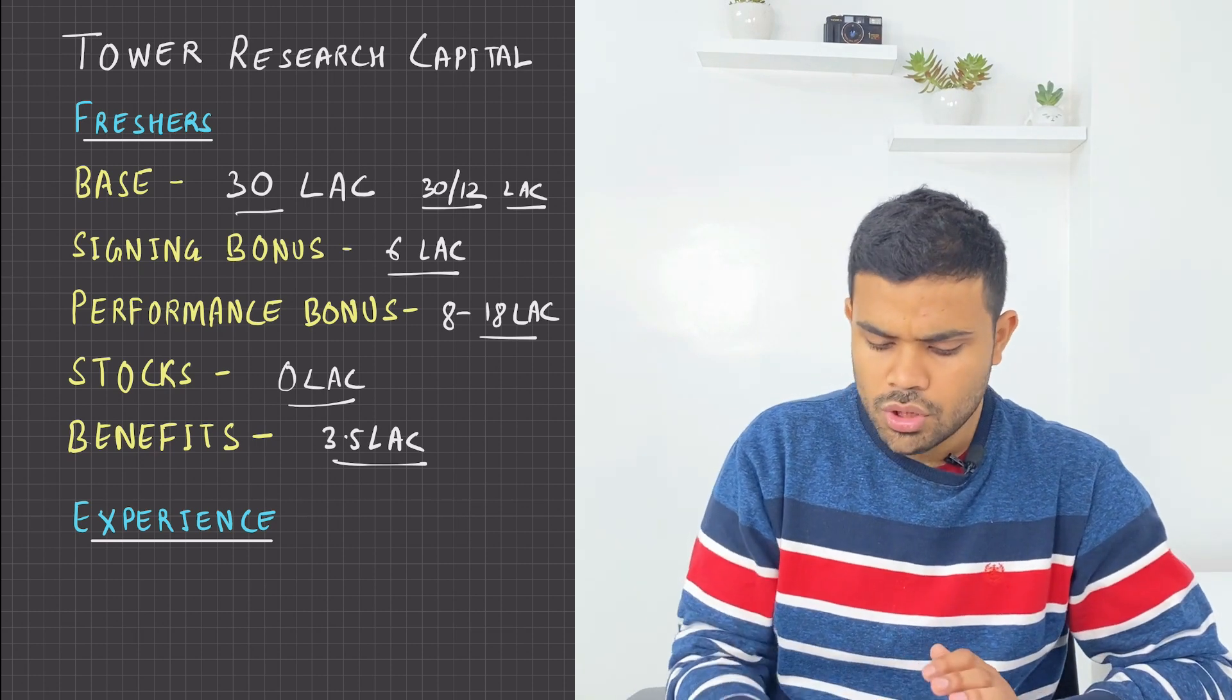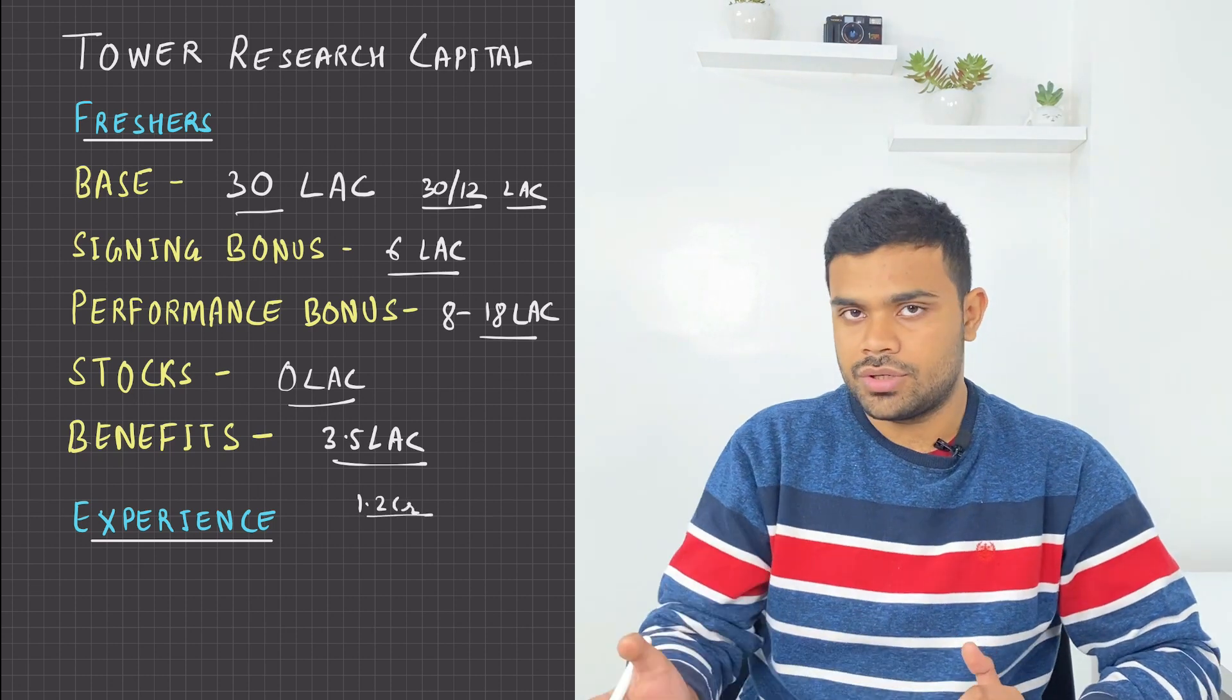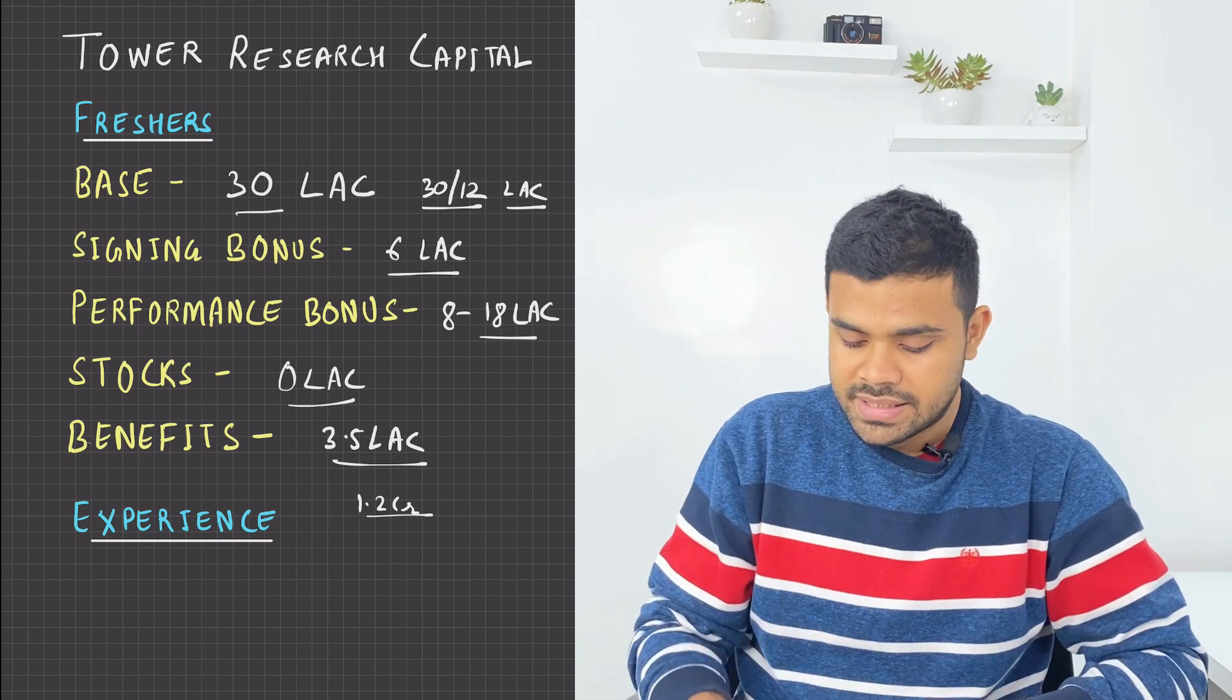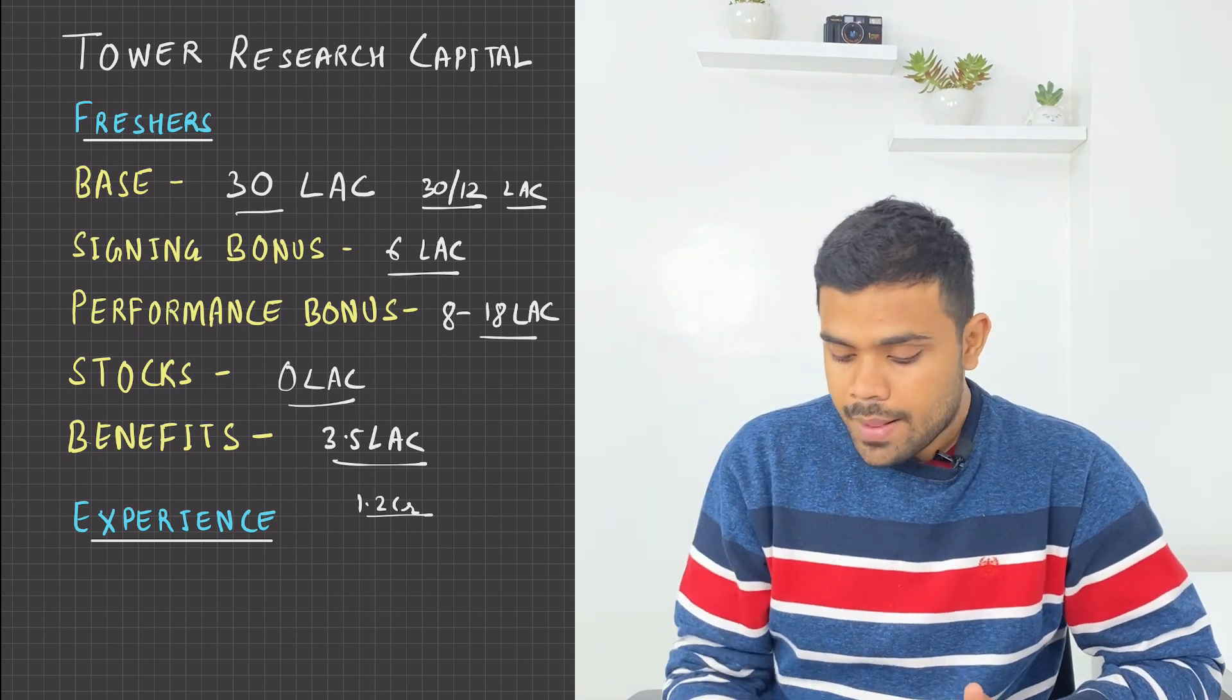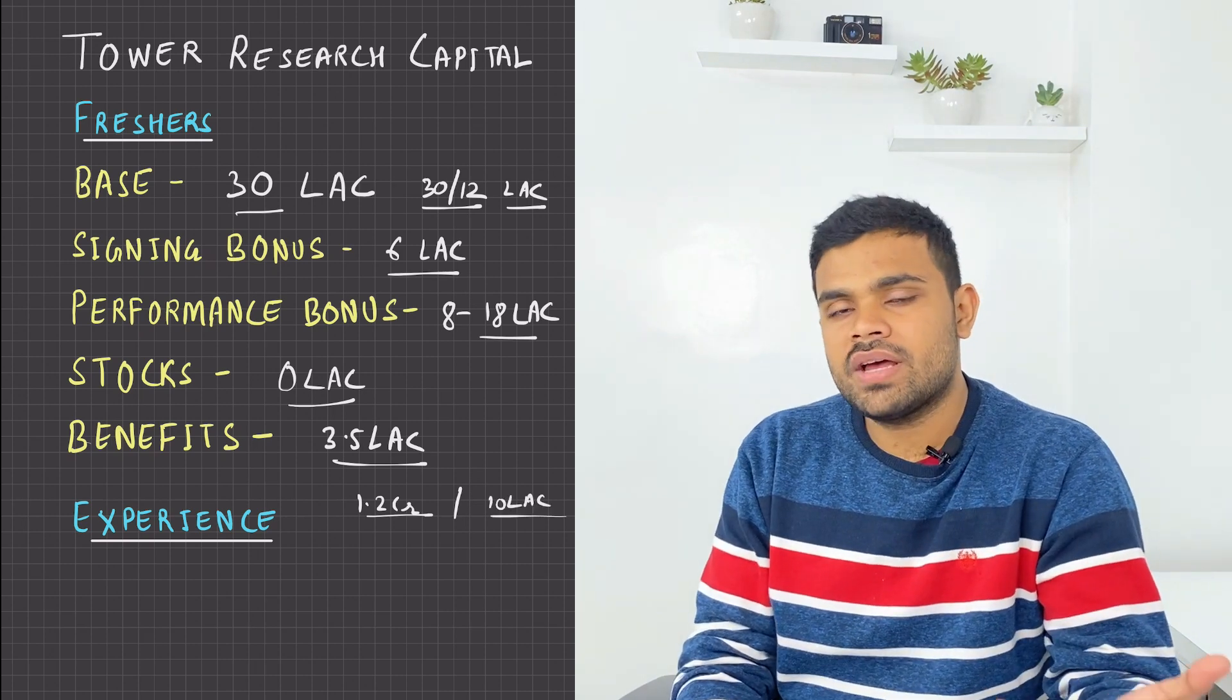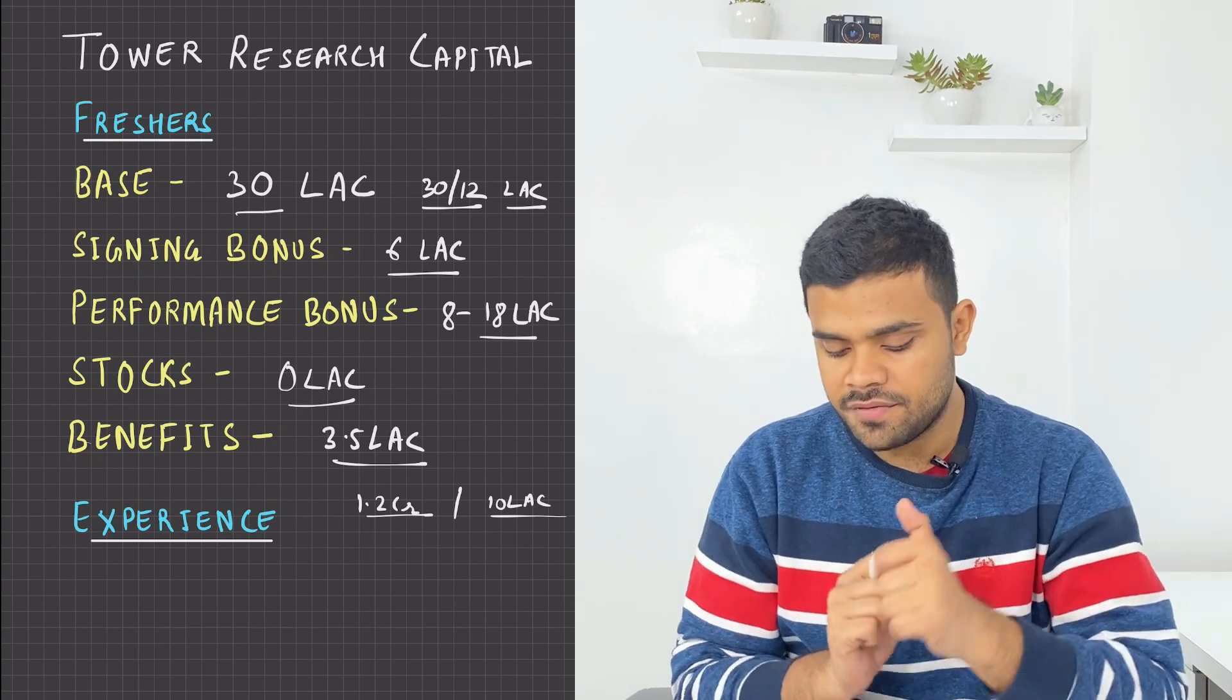So if your base is 30, 1.2 CR will be your term insurance. Term insurance is not a good thing, but still you have this as an assurance. Apart from this, you also have a medical insurance of 10 lakhs. And then you also have 5 weeks of paid vacations. Generally, all companies have these benefits.